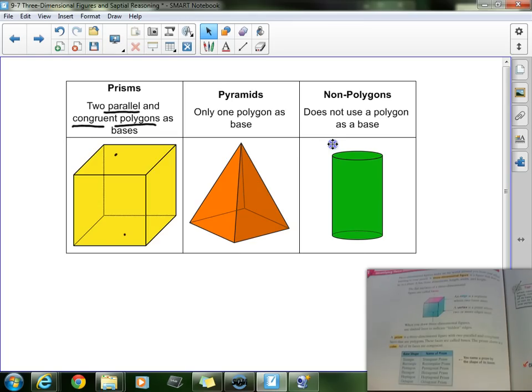Now cubes, the one you see there, is a little different because we call that a cube. But if I were to have a triangle as the base, I would call it a triangular prism. If I were to have a rectangle as the prism's base, it would be a rectangular prism, and so on and so forth.